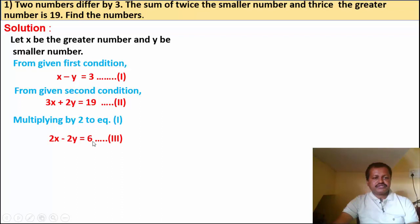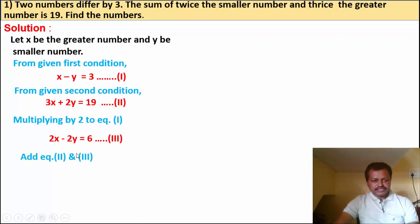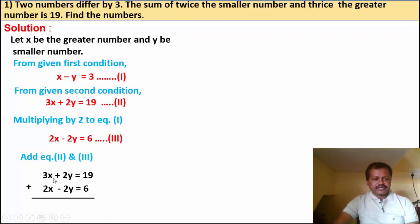Multiplying equation 1 by 2 gives: 2x minus 2y is equal to 6. That is equation number 3. Now add equation 2 and equation 3: 3x plus 2y equals 19, plus 2x minus 2y equals 6. Adding: 3x plus 2x gives 5x; 2y minus 2y cancels; 19 plus 6 is 25.